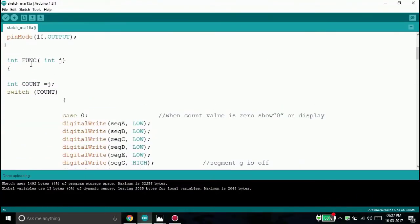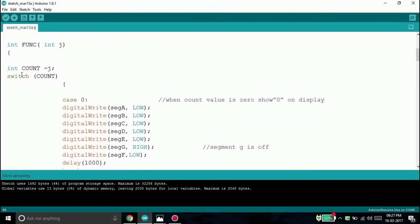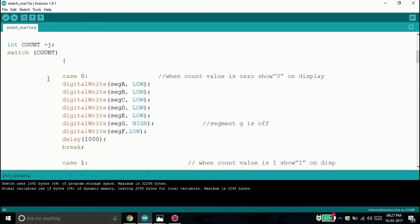After this, I have defined a function func in which I have a switch case. The switch variable receives the value of J and decides which case is to be executed. I have a total of 10 cases starting from case 0 to case 9.